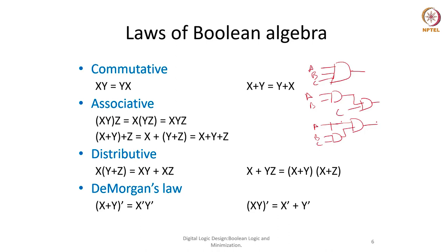Distributive law is more interesting — it is a mixing of two operations. If I want to AND X with the OR of Y and Z, I can also write it as (X AND Y) OR (X AND Z). Similarly for the other form: if X is being ORed with the AND of Y and Z, we can also write it as (X OR Y) AND (X OR Z). So the distributive law allows us to reorganize these operations.